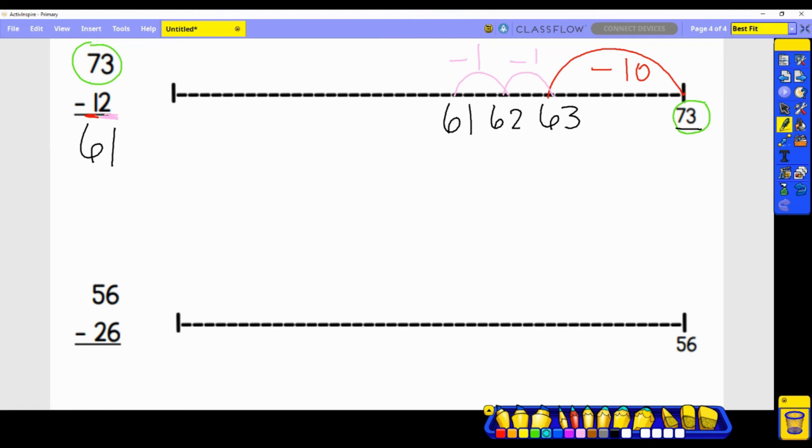56 minus 26. Our 56 is here and it is represented all the way to the right on the open number line. Let's start by looking at our tens. The tens place has a value of two tens. So we know that we're going to have one, two jumps that represents subtracting 10 twice. Next we look at the ones place.